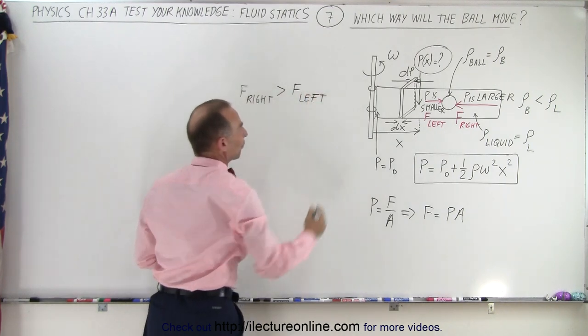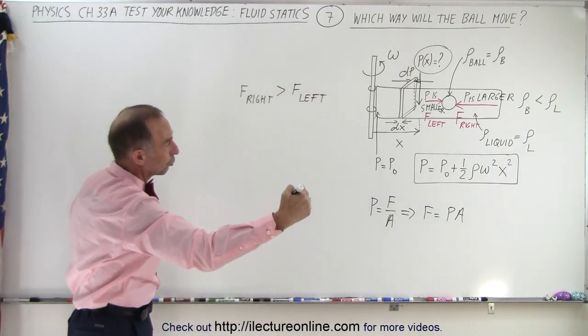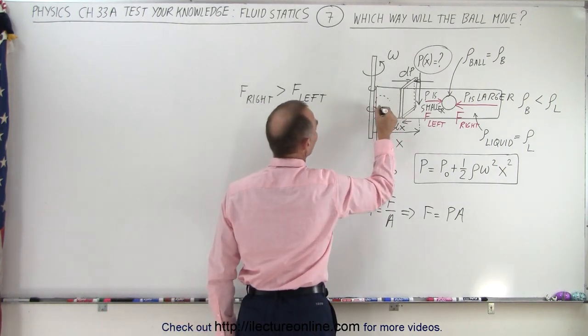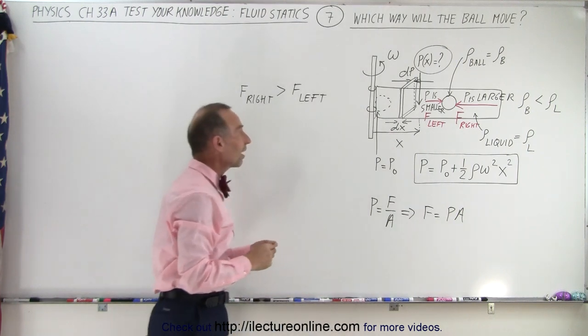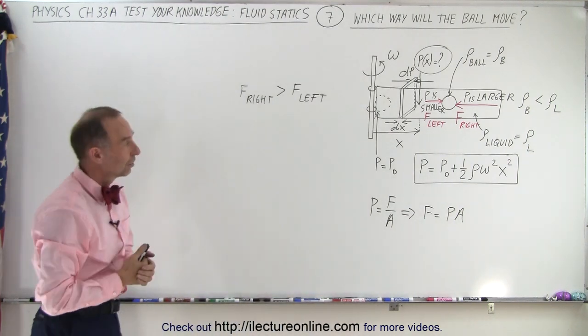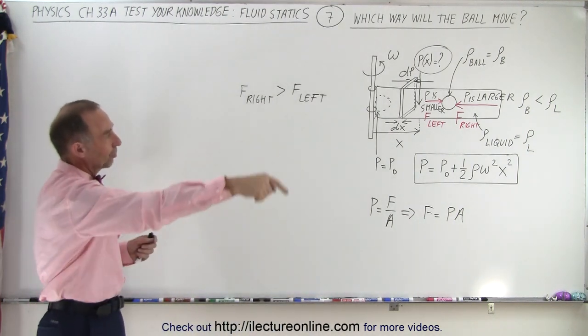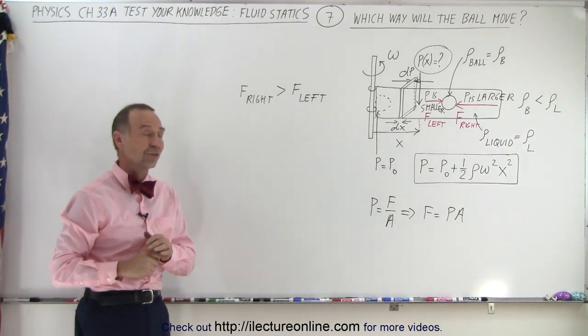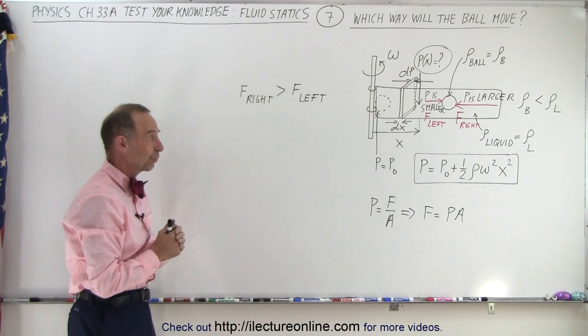And of course if the force on the right is greater, then the greater force will push the ball to the left, and eventually the ball will end up at the very left side, or the very inner side of the rotation. So on the very left side of the tube, or as the tube goes around, the closest to the axis of rotation. So the ball will simply get pushed to that point right there.